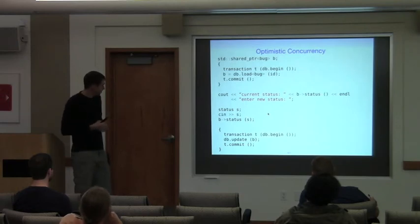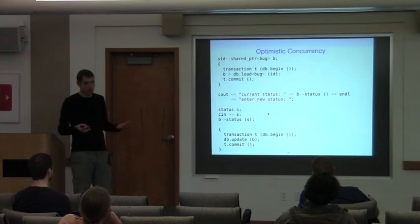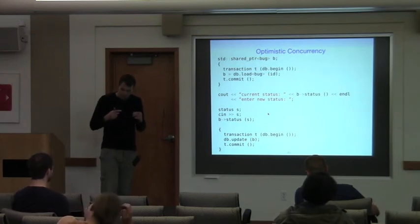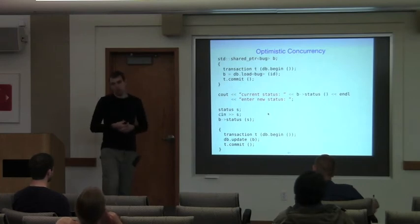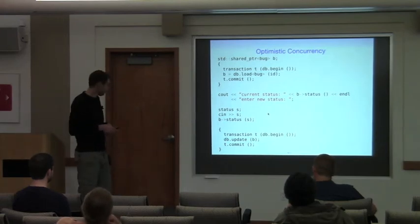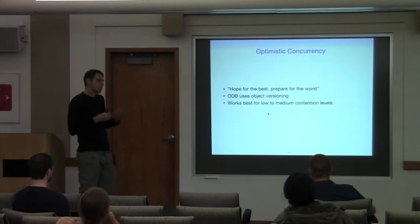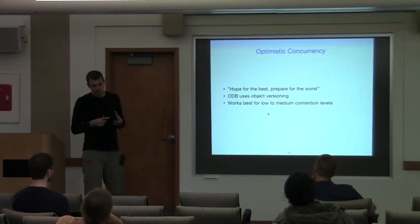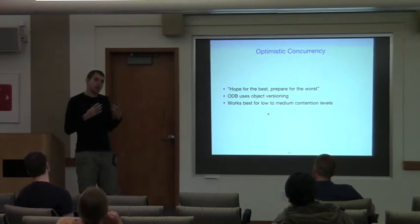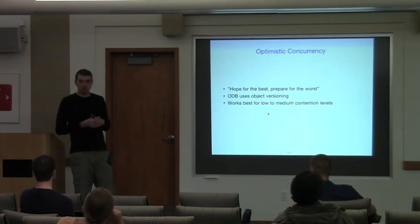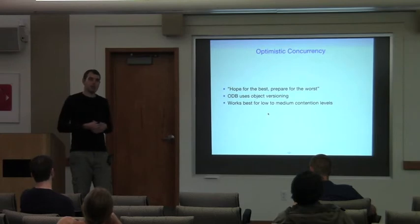The first fix is to split the transaction into two. But now anyone can update the object underneath us while we are waiting for user input. At best, we will override a new value based on outdated information. This problem of long-lived application transactions is fairly common in the database world, and the solution normally used is optimistic concurrency — the idea is to hope for the best but be prepared to handle the worst. More specifically, hope that nobody will change the object while we're working with it, but detect and recover if they do.